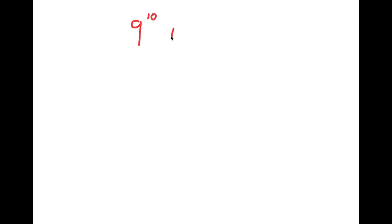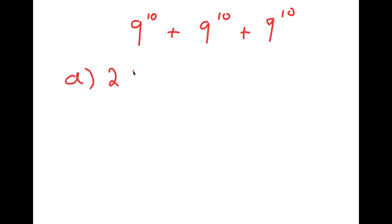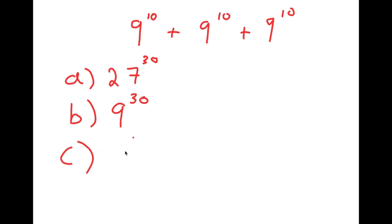In this video, I'm going to be solving the problem 9 to the power of 10 plus 9 to the power of 10 plus 9 to the power of 10. For this problem, I have four answer choices: A is 27 to the power of 30, B is 9 to the power of 30, C is 27 to the power of 10, and D is 3 to the power of 21.